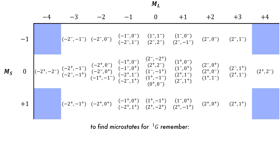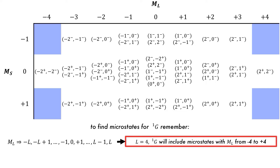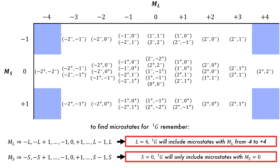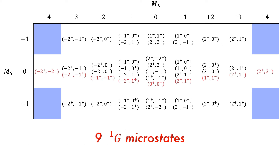Now we need to determine which microstates represent the singlet G atomic state. If L equals 4, then ML will range from +L to -L: -4, -3, -2, -1, 0, +1, +2, +3, and +4 — giving 9 different ML values in singlet G. For MS values, this is trivial as we only have 0 for MS in this atomic state. So we remove one microstate from each of the blocks in the middle row, as those are defined by the singlet G atomic state.